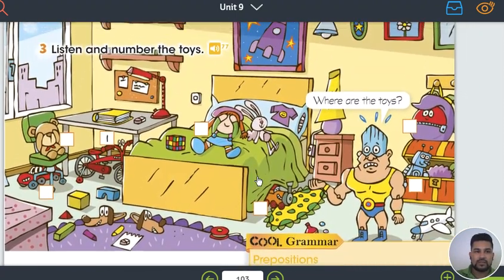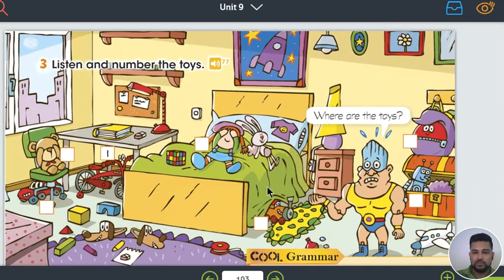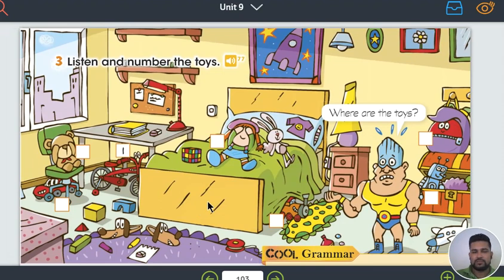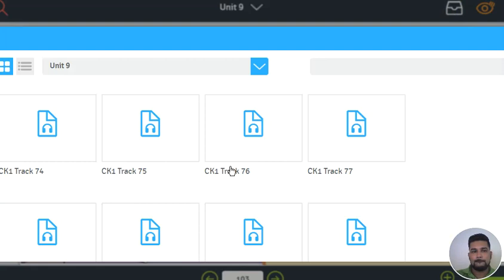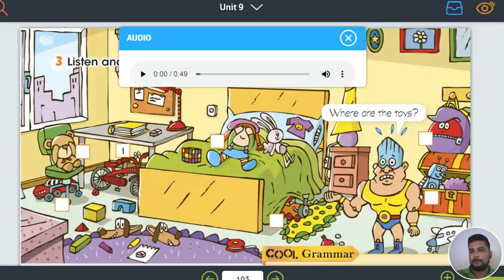Okay, let's go into practice. Let's practice on the page, a hundred and three. So, look at the picture. Where are the toys? We're going to listen and number the toys. Escucha y enumera.